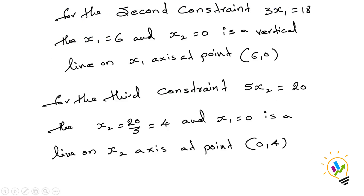For the second constraint 3X1 equal to 18, we don't have an X2 variable. When X2 is equal to 0, X1 becomes 6. So the point for this constraint is (6, 0).